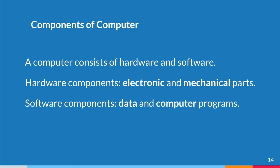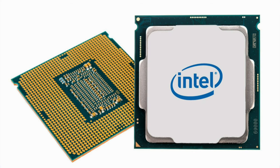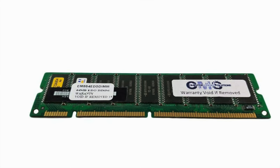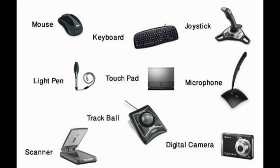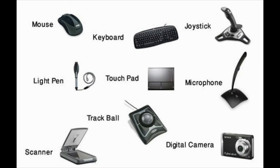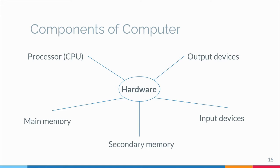The major hardware components of a computer system are the processor (CPU), main memory, secondary memory, input devices, and output devices. For a typical desktop computer, the processor, main memory, secondary memory, power supply, and supporting hardware are housed in a metal case.